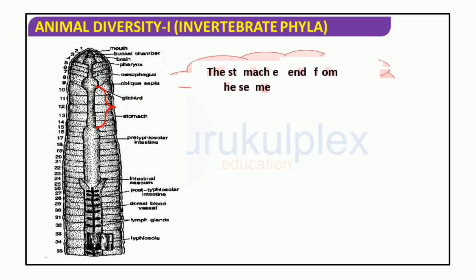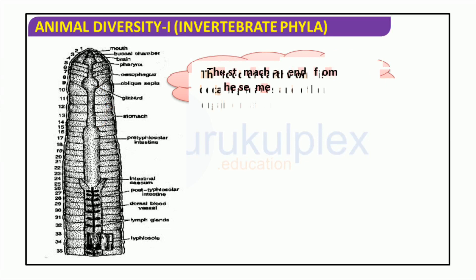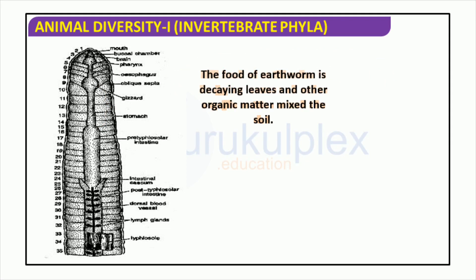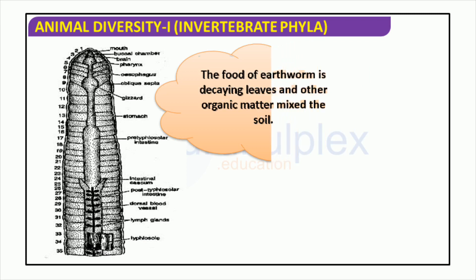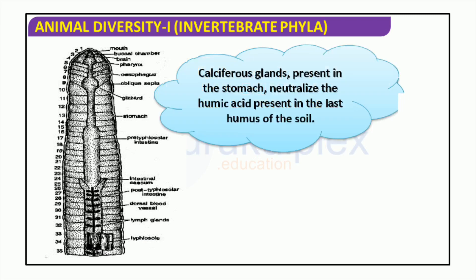Regarding animal diversity I, the stomach of an earthworm extends from the 9th to the 14th segments. The food of the earthworm consists of decaying leaves and organic matter in the soil, and the calciferous glands in the stomach neutralize the humic acid. The intestine starts from the 15th segment and projects from the 26th segment with a pair of short and conical intestinal caeca.